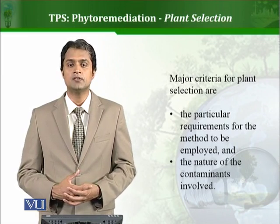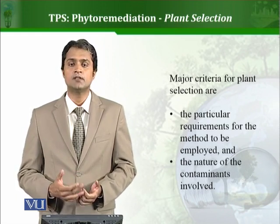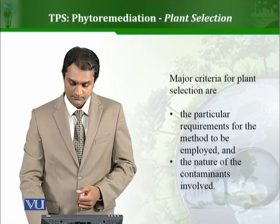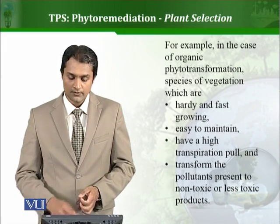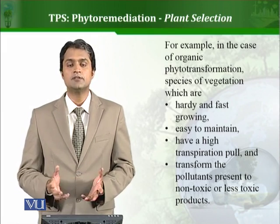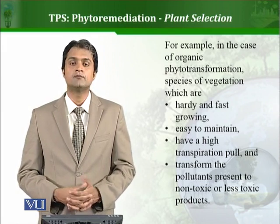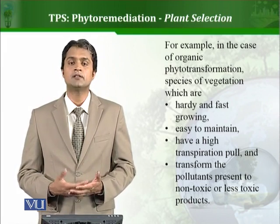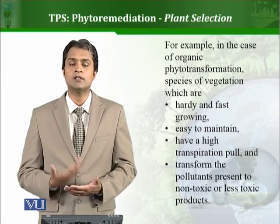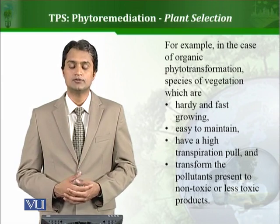There are so many different plant species from which we can pick and choose — species which are known to resist, accumulate, transform, and detoxify different types of toxic compounds. For example, in the case of organic phyto-transformation, the plant species we would like to select should be fast-growing, so that we can quickly grow them at the site and quickly accumulate or transform the toxic compounds.